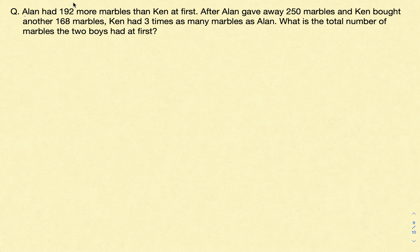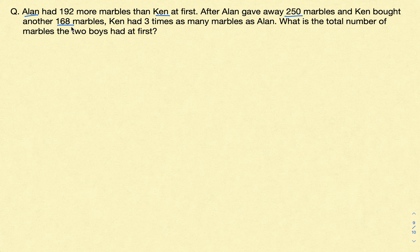So what we have here is that there are two boys, Ellen and Ken. At first, Ellen was having 192 more marbles than Ken. Then later, Ellen gave away 250 marbles — the one who is having more marbles gave away 250 — and Ken bought another 168 marbles. Because of this, at the end Ken had 3 times as many marbles as Ellen. The question is: what is the total number of marbles the two boys had at first?